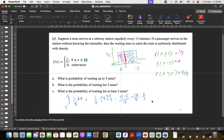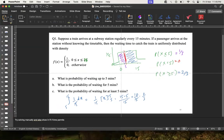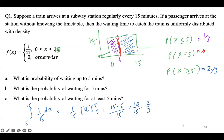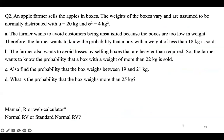We now move on to the next question, which involves a normal distribution — you'll be given a mean μ and variance σ².